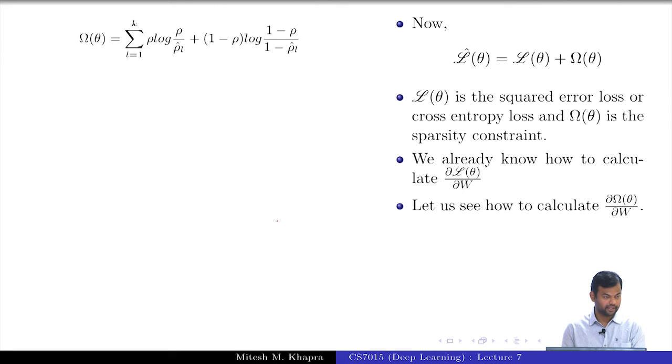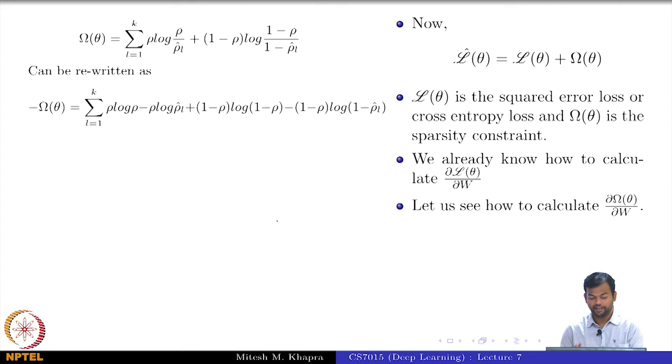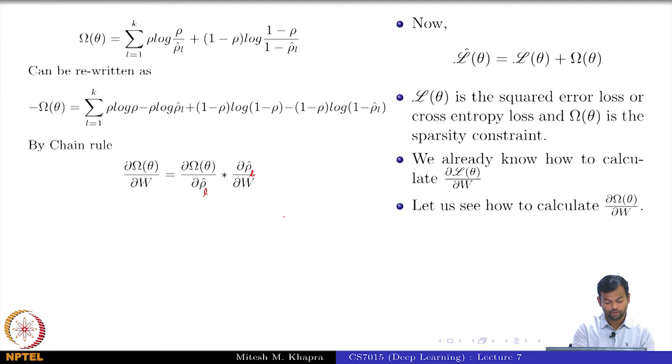Now this is what omega theta is and it can be rewritten as this, just expanding out the log function. And by chain rule this is what I get. Now unfortunately the rest of the slide, there is an error. The TAs please note this, I kind of overlooked this, but I will just convey the idea. You would want to do something of this sort. Remember what is rho hat L? It depends on h of L.